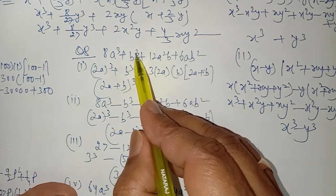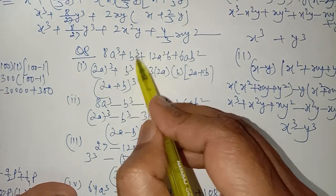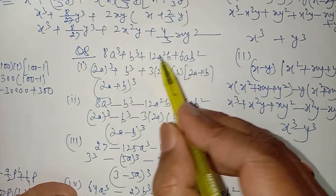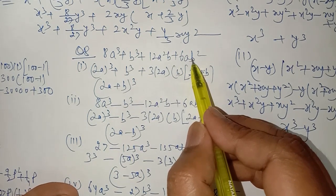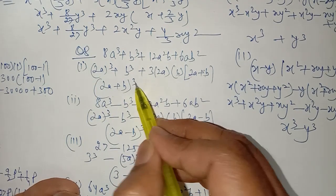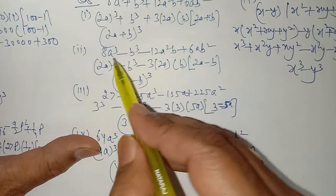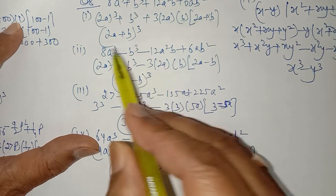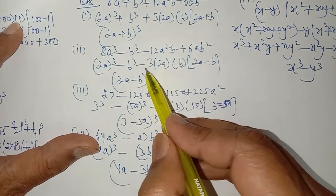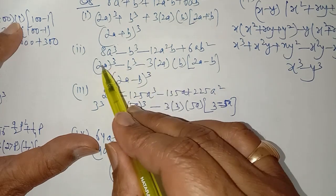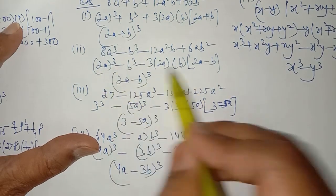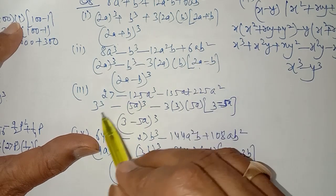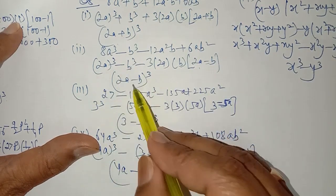From these two terms you can identify whose whole cube it is. Since all terms are positive (plus), this is (2a) whole cube and this is b whole cube. Write 3a into b on your own, and in the bracket write a plus b. The remaining terms will automatically match. So it is (a minus b) whole cube for a similar case.